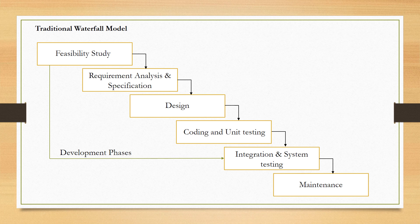The second activity is requirement analysis, in which ambiguity, repetitions, or incompleteness are removed and requirements are converted into an understandable form. After that, all requirements need to be documented — this is the third activity, requirement specification. The document that contains all the requirements is called the Software Requirement Specification, or SRS.